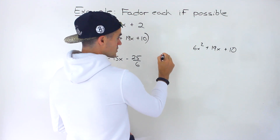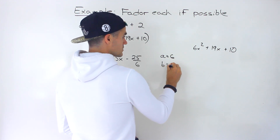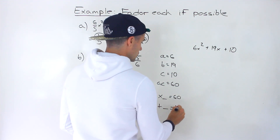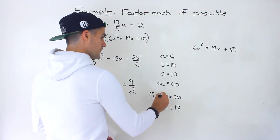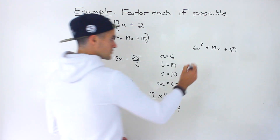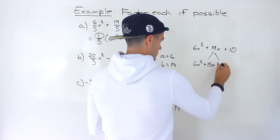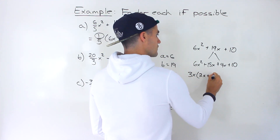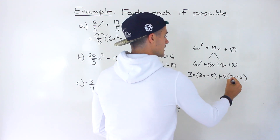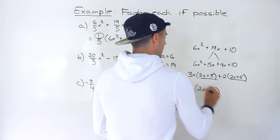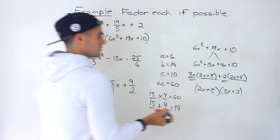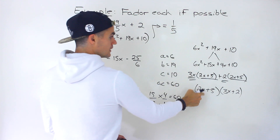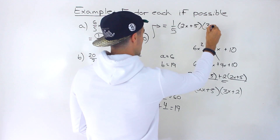So we can't take anything out initially, so we just go into seeing whether we can factor with decomposition. The AC value is 60. We've got to find two numbers that multiply to 60 and add up to that B value of 19 — that would be 15 and 4. So we decompose that B value, then factor by grouping. From the first two terms, we take out a 3x and are left with 2x plus 5. From the last two, we take out a 2 and are left with 2x plus 5. Taking out the 2x plus 5, we're left with 3x plus 2. The final answer is 1 over 5 times (2x + 5)(3x + 2).